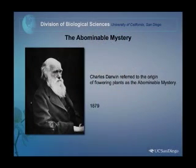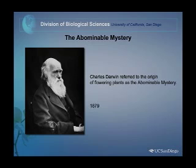Of course, it's impossible to give a talk in this lecture series without mentioning Darwin. What I want to focus on is his contributions to plant biology and one particular observation he wrote about back in 1879: he referred to the origin of flowering plants as the 'abominable mystery.' Just suddenly in the fossil record the angiosperms emerged, and just as suddenly they diversified to dominate the landscape. Darwin posed this question, and it remains largely unanswered today, although many clues have come to light in recent years.